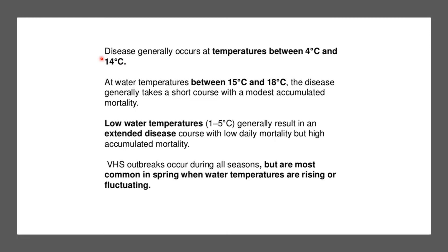The disease generally occurs at temperatures between 4 and 14°C. At 15 to 18°C, the disease takes a short course with modest accumulated mortality. Lower water temperatures result in an extended disease course with low daily mortality but high accumulated mortality. VHS outbreaks occur during all seasons but are most common in spring when water temperatures are rising or fluctuating.